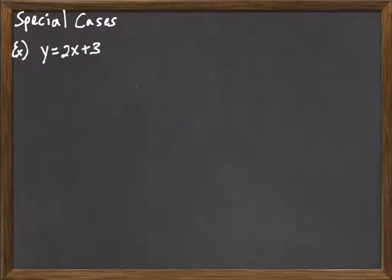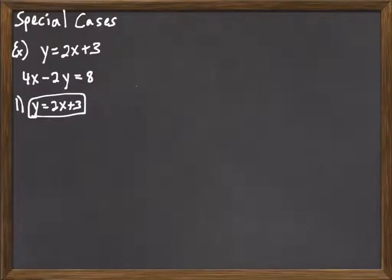So consider the example y equals 2x plus 3 and 4x minus 2y equals 8. So we want to solve this by substitution. We take advantage of the fact that one of the equations is already solved for a variable, so we go ahead and make use of that.